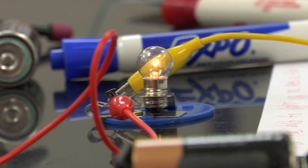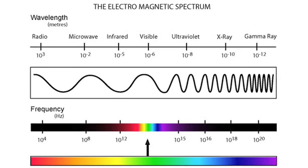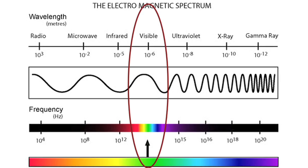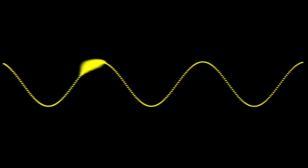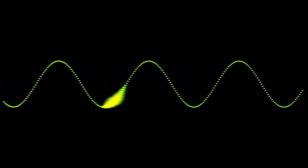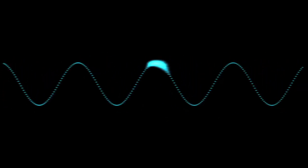Visible light travels in waves. It makes up a small part of the electromagnetic spectrum that is visible to us. Wavelength determines the color of the light. Longer wavelengths will appear red while shorter wavelengths are violet.